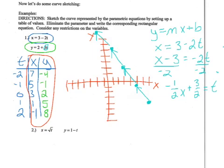Now, all we need to do is use substitution and replace the t in the y equation. I have y equals 2 plus 3 times negative 1 half x plus 3 halves. Then we need to do a little simplifying.